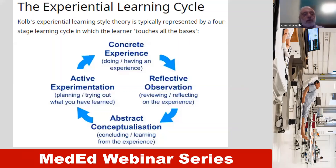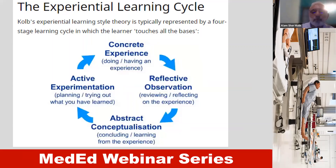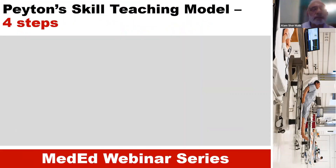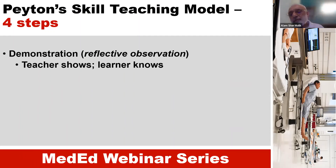We can also use Kolb's experiential learning cycle, which is based on experience and reflection. The students have seen a procedure, they reflect on it, they think about it, and then they do active experiments. And if we can actually combine these two — Peyton's four steps along with Kolb's experiential learning.